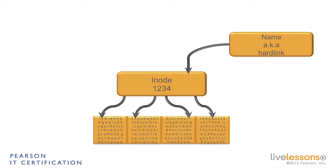Now for us as human beings, it is useful if we also have a name that is connected to the INODE, because humans cannot work with INODE numbers — computers can, but humans cannot. So we give the file a name, and that can be any name. From the operating system perspective we call that a hard link.